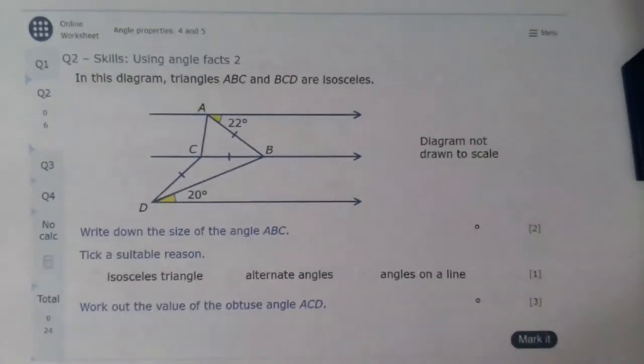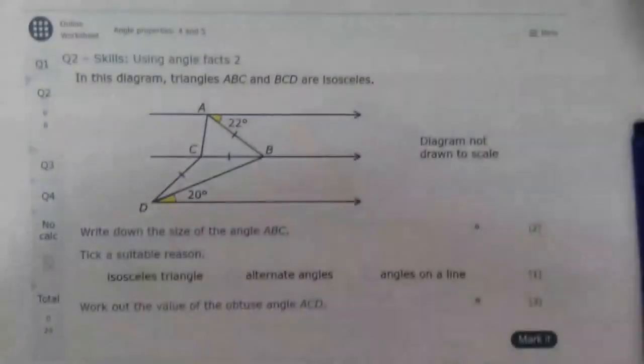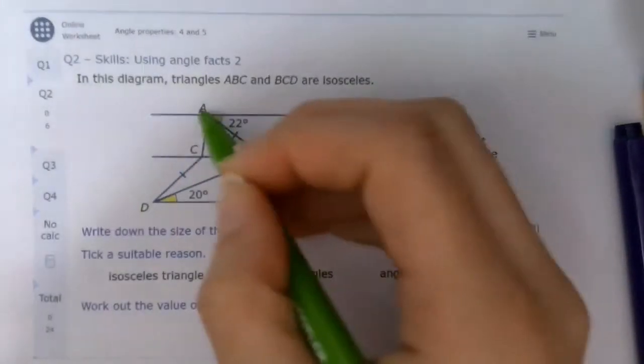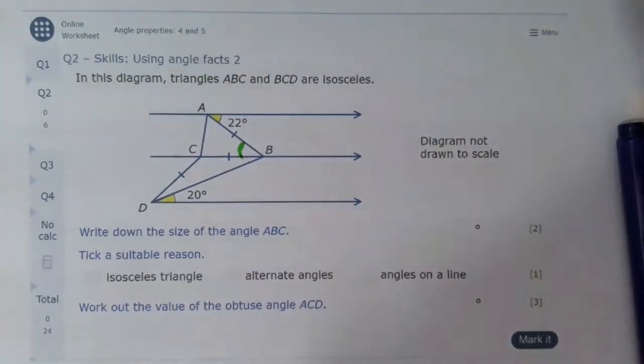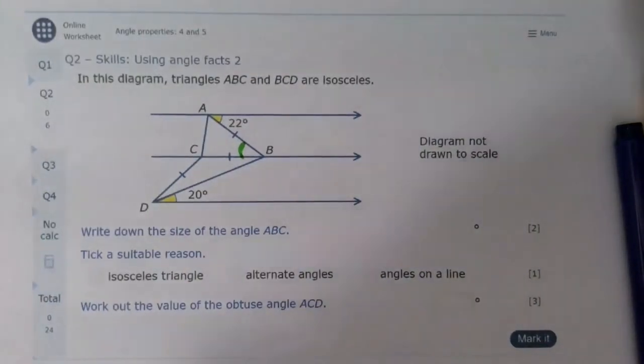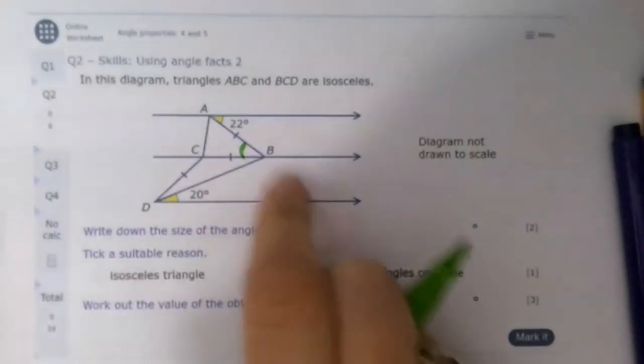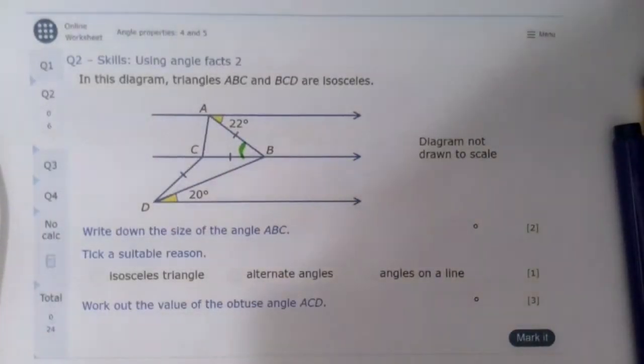We need to work out the size of angle ABC. So the angle ABC means we start at A, we go down to B, and we go across to C. So those two lines make this angle here, and we can see it's going to be 22 because it's in parallel lines and it's on the transversal, 22.